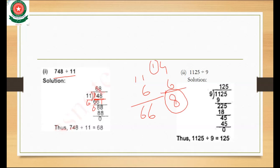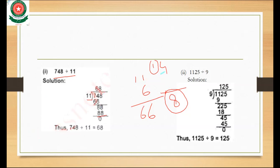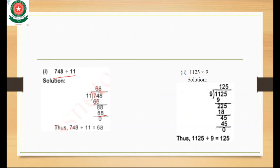We take the next digit 8 from the remaining values. We multiply with the number nearest to 8: 11 times 8 is 88. So 88 minus 88 equals 0. When we divide 748 by 11, the answer 68 comes. Understand, class?